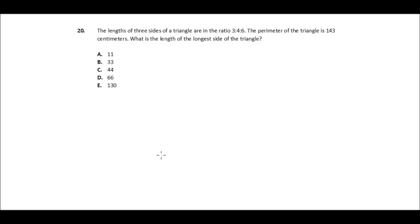So we have this triangle here that has a perimeter of 143. So 143 equals the perimeter, and we know that the sides of the triangle are in a ratio to one another.